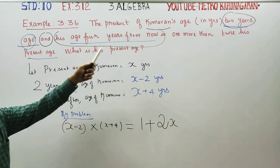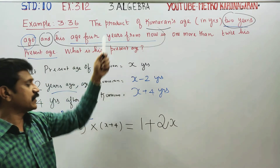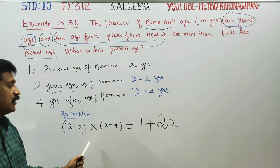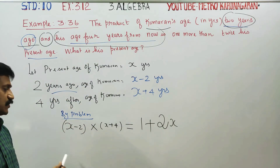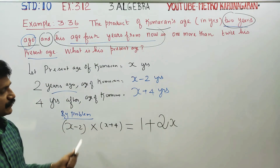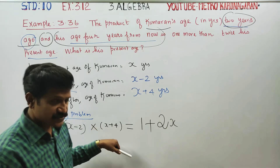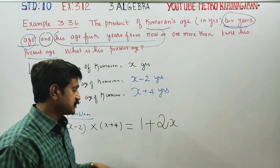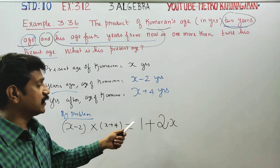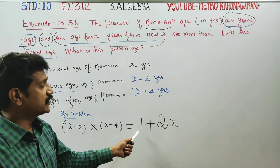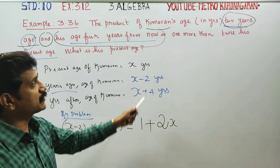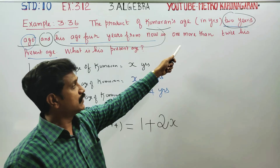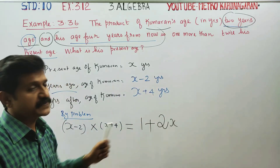So our concept is: product of (x minus 2) and (x plus 4) equals one more than twice the present age.